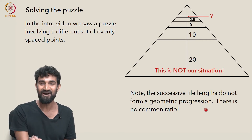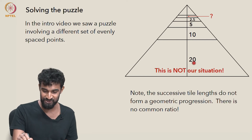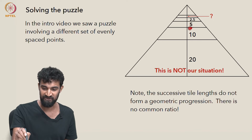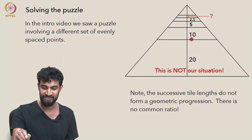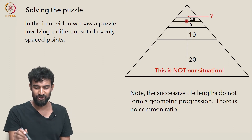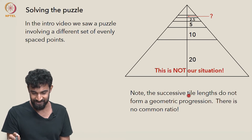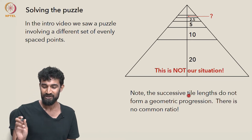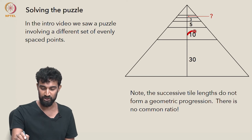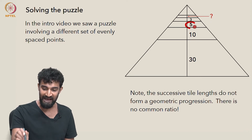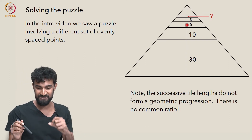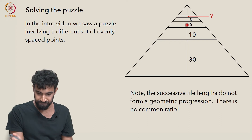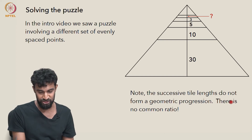A geometric progression is one where the ratio between successive numbers is always the same. For example — not our situation — if the first was 20, the next 10, the next 5, the next 2.5, the common ratio would be 1/2 and you keep multiplying by it. But that's not our situation. Instead it's a stranger pattern where the ratio keeps changing: 30 to 10 is a ratio of 1/3, 10 to 5 is 1/2, 5 to 3 is even a little bigger. So there is no common ratio and it's not a geometric progression.